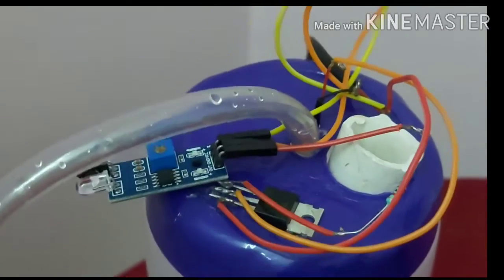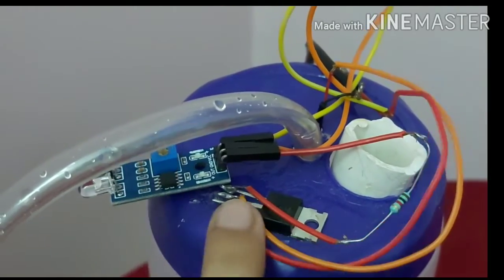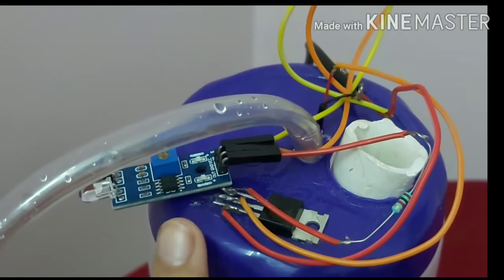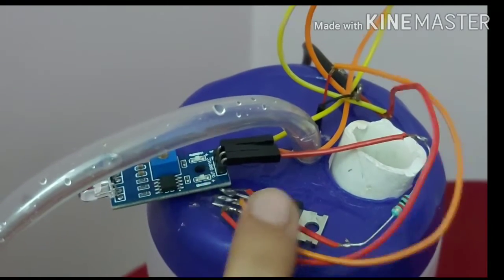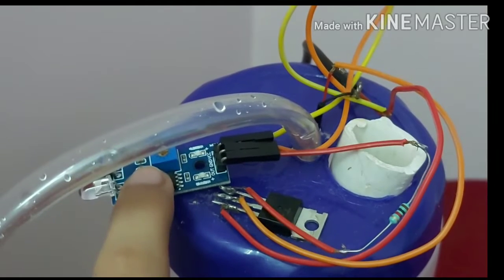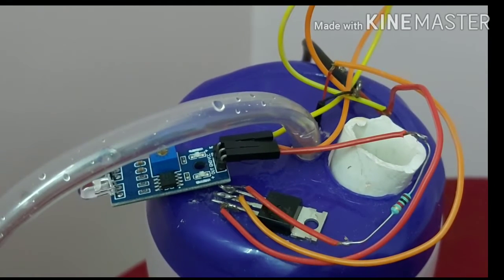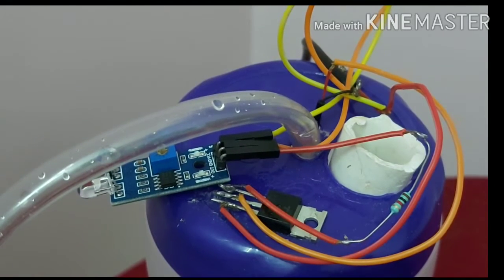First, we have to arrange or fix all the items in the bottle or container in its cap. First, this TIP32C transistor, then our IR sensor. These are the two materials which we need to fix.